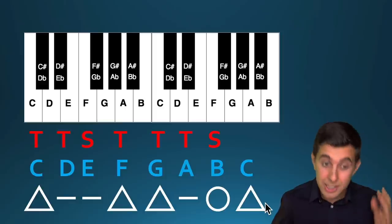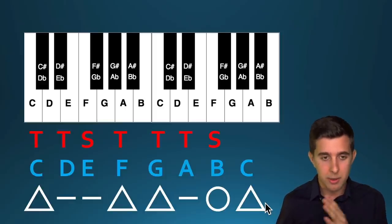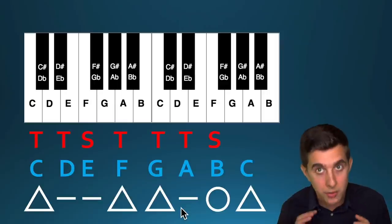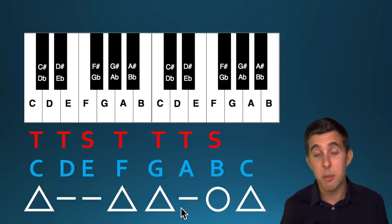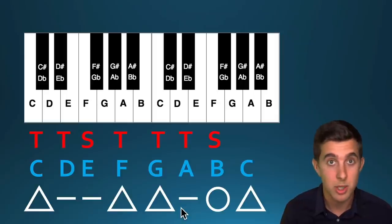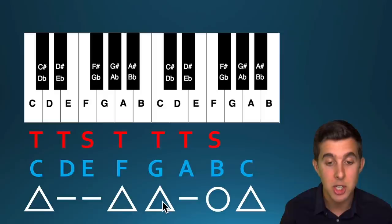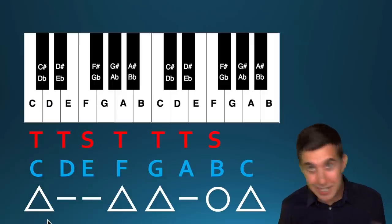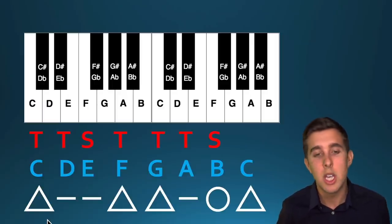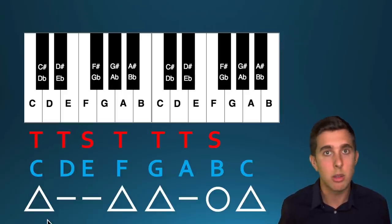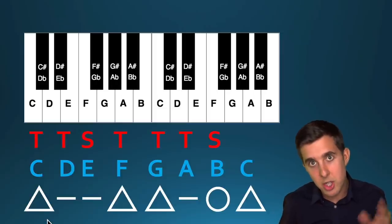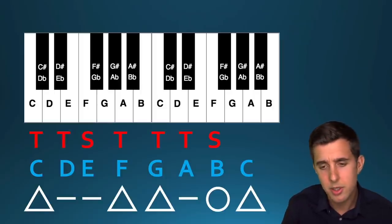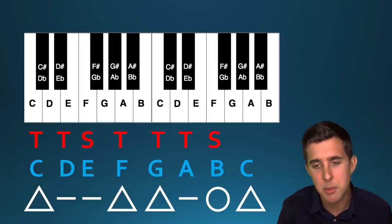Another pattern for you to remember: major, minor, minor, major, major, minor, diminished, major. Try to internalize this so you know the chord for each scale degree. Practice going tone, tone, semitone, tone, tone, tone, semitone to know the notes, and then major, minor, minor, major, major, minor, diminished, major to know the chords. After a while it will just be really fast — you'll get unconscious competence and just know instantly what chord goes with each note in whatever key you're in.